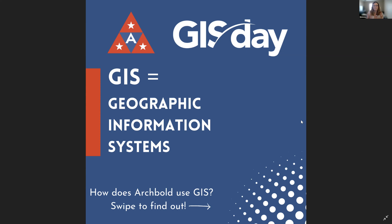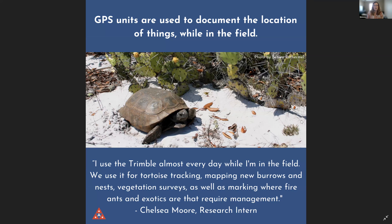Let's take a look at all of the ways that Archbold uses GIS. The first way is by using GPS units, which can take a high-accuracy track of location in the field. Here we can see an example of a gopher tortoise — in our herpetology lab, they use a GPS unit, the Trimble device, to track where the tortoises are at any time. They use it for nests, vegetation surveys, where exotics are that require management, or anything that requires a precise location.